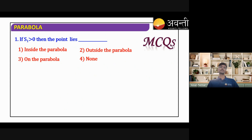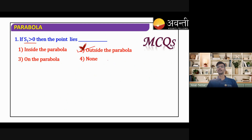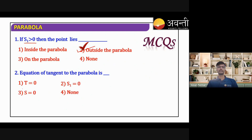Quick MCQ: if S₁ > 0, the point lies outside the parabola. The equation of tangent is T = 0.